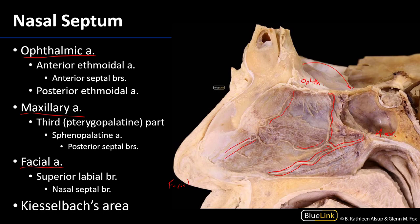There is also a potential branch from the greater palatine artery, though we're not in the appropriate plane to see it here, but it can also serve the nasal cavity. One thing to really bring your attention to is the anastomoses between these arteries, especially in this area — that's referred to as Kieselbach's area, and it is the most frequent source of epistaxis, or nosebleeds, in the nasal cavity. Over 90% of cases of epistaxis occur from Kieselbach's area.